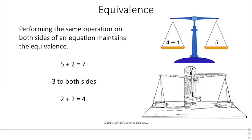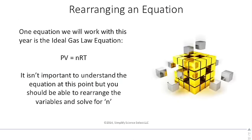Equivalence means performing the same operation on both sides, and that maintains the equivalence. If you have 5 plus 2 equals 7, that's a true statement. If I subtract 3 from both sides, I get 2 plus 2 equals 4, and you maintain the equivalence.